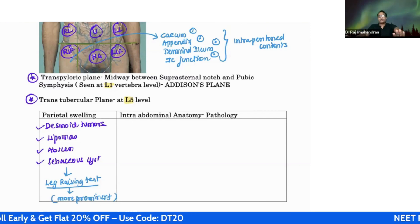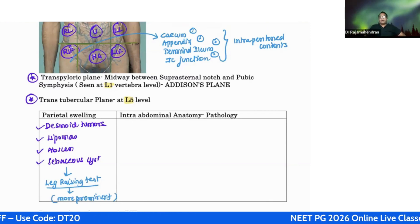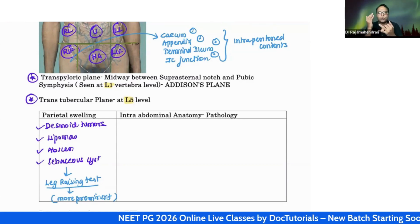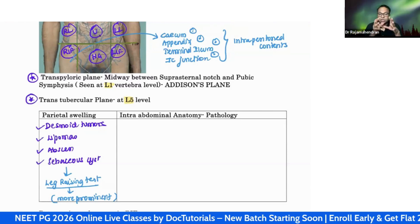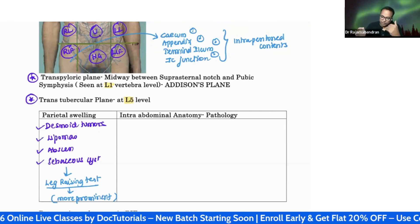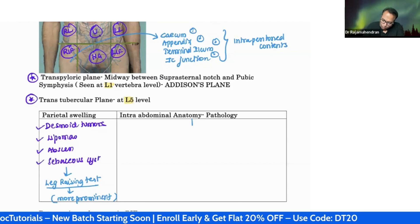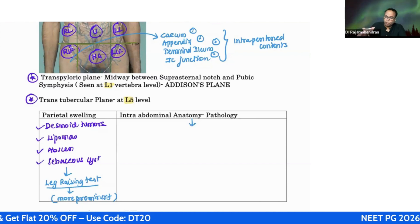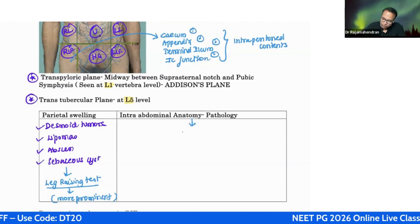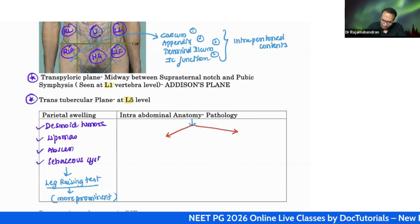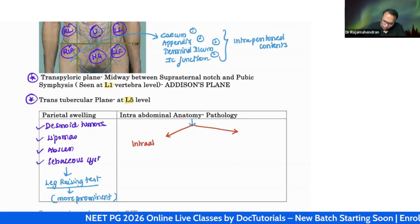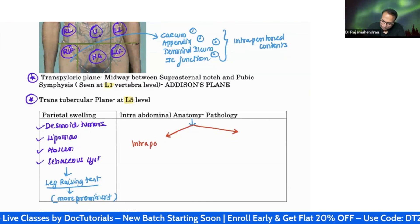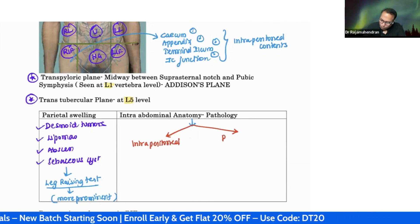Desmoid tumors, lipomas, abscesses, and sebaceous cysts all become more prominent on leg raising. If it is intraabdominal pathology, the swelling becomes less prominent - what was easily palpable before now becomes less so. Intraabdominal swellings can be further divided into intraperitoneal and retroperitoneal.